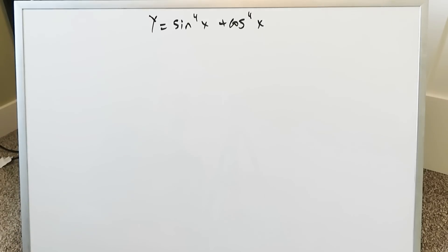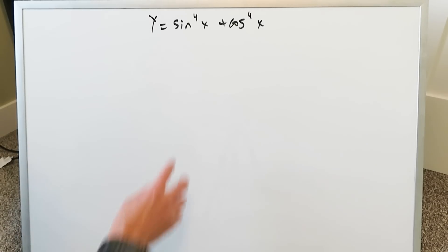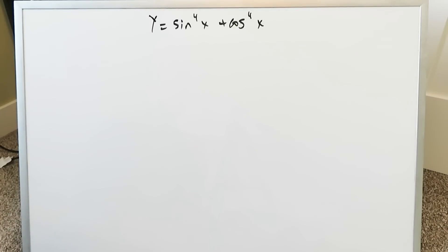We have y equals sine to the 4x plus cosine to the 4x. These are exponent 4s. We just have to simplify this using any means necessary and there could be multiple ways of doing it.